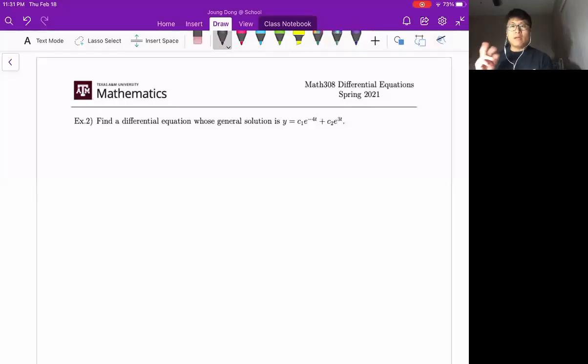If you have a linear combination form of the exponential function as given in the problem, e to the minus 4t and e to the 3t, then we should say the differential equation is the second order linear differential equation with constant coefficient. So definitely it is homogeneous.